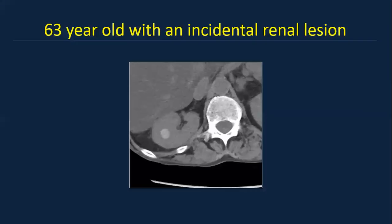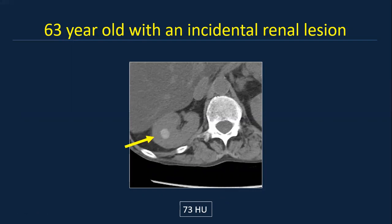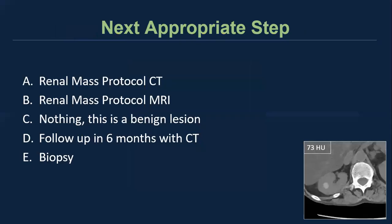We have a case of a 63-year-old gentleman with an incidentally detected right renal lesion. The lesion measures 73 Hounsfield units on non-contrast CT. The question is: what is the next appropriate step when we see a lesion like this? Is it to recommend renal mass protocol CT? Renal mass protocol MRI? Should we do nothing because this is a benign lesion? Bring the patient back in six months with CT? Or refer the patient for renal mass biopsy?